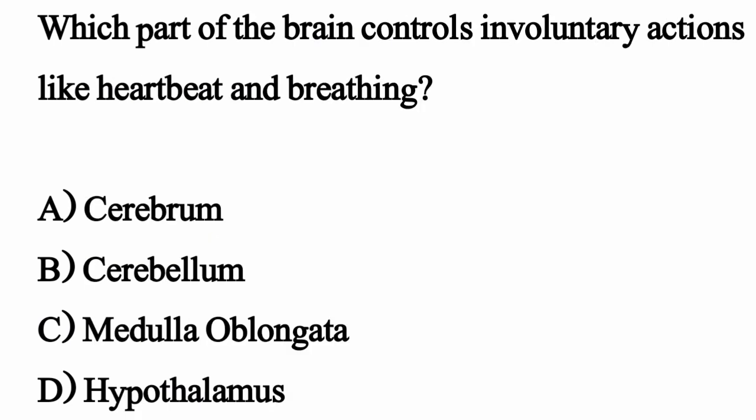Which part of the brain controls involuntary actions like heartbeat and breathing? The correct option is Option C: Medulla oblongata.